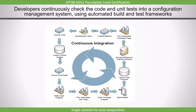Let's understand this point with the help of this diagram. Once the source code is developed and available, we do version controlling of it — that means we provide a unique ID to it so that it is easily identifiable. Then we start the build process where we complete the compiling and linking process and executable files are generated.